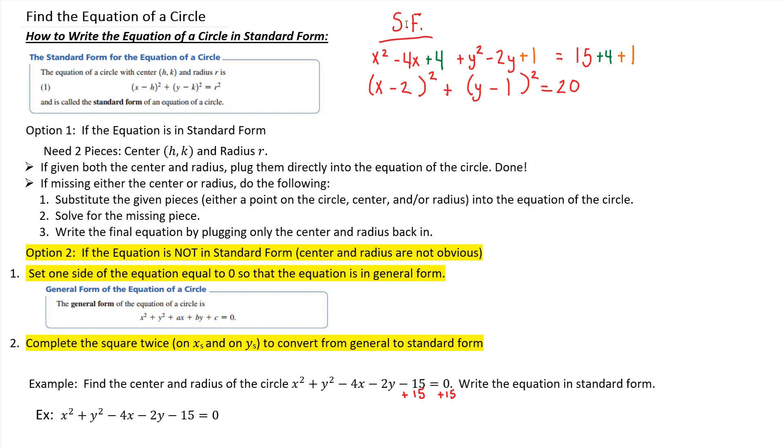The center and the radius basically comes from this. Remember your formula. Your center is who's being subtracted off from your x and y. So from the x's, 2 is subtracted off, and from the y, 1 is subtracted off. So your center is 2, 1.